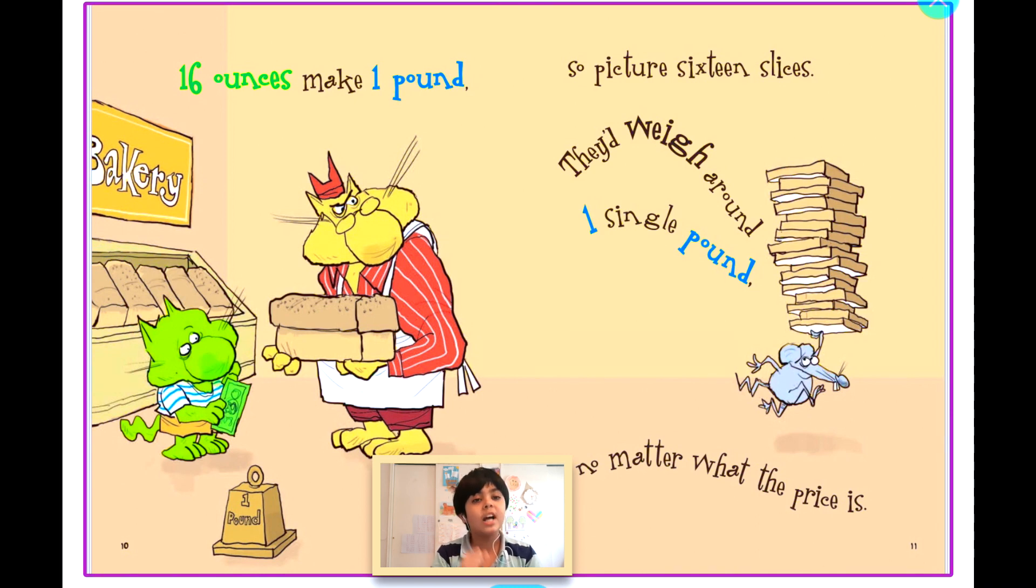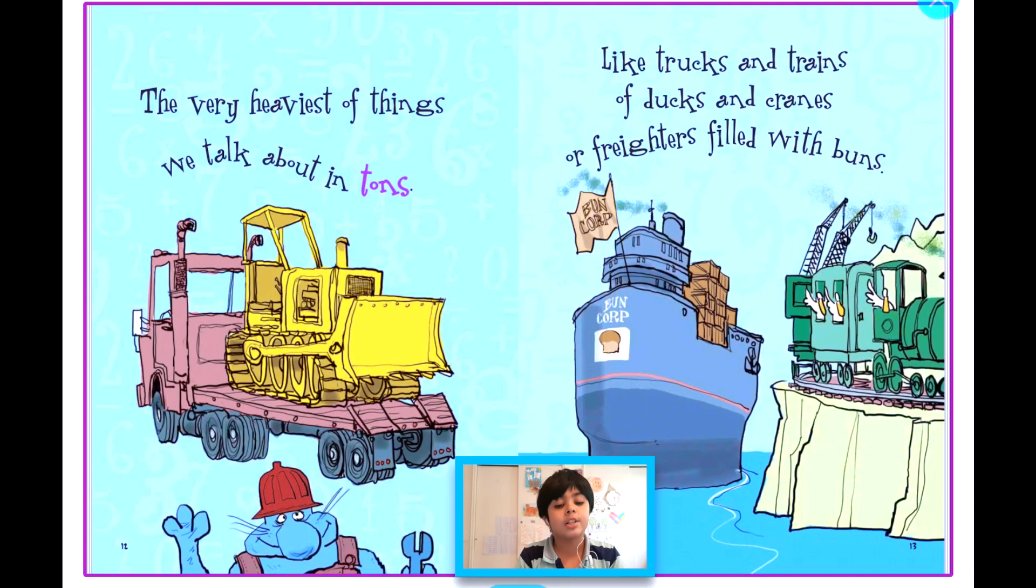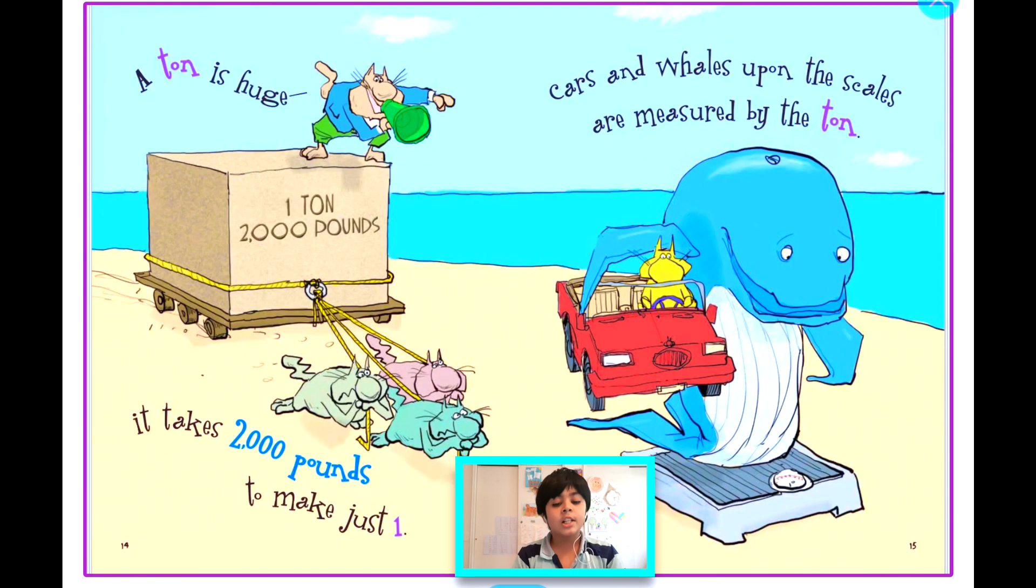16 ounces make one pound. So picture 16 slices—they'd weigh around one single pound no matter what the price is. The very heaviest of things we talk about in tons, like trucks and trains and ducks and cranes, or freighters filled with buns.